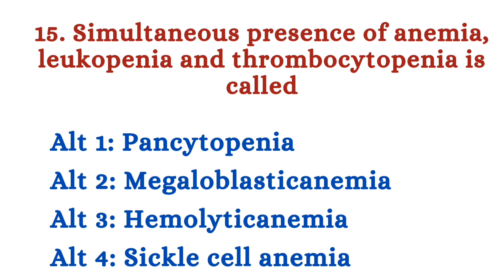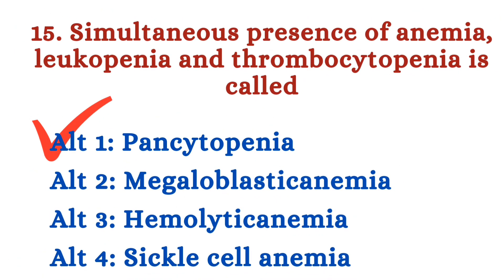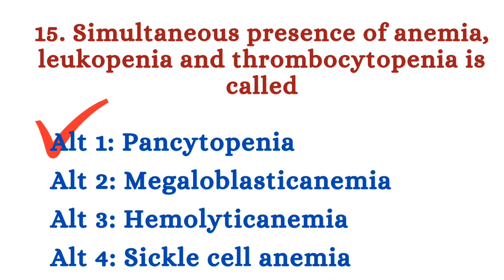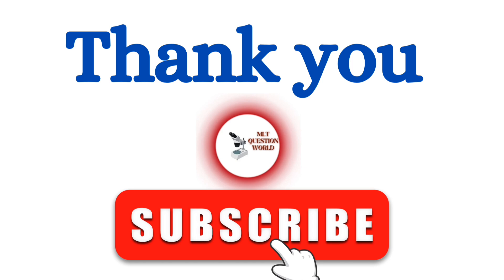Question number 15: Simultaneous presence of anemia, leukopenia, and thrombocytopenia is called — Option 1: Pancytopenia. Option 2: Megaloblastic anemia. Option 3: Hemolytic anemia. Option 4: Sickle cell anemia. The right answer is Option 1 — pancytopenia. Simultaneous presence of anemia, leukopenia, and thrombocytopenia is called pancytopenia.